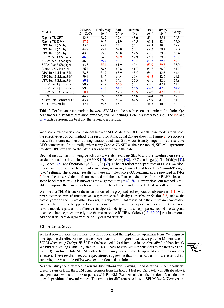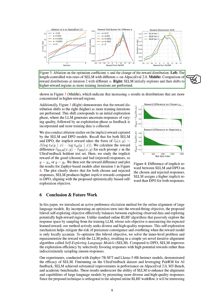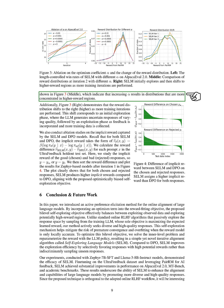We conducted ablation studies to gain a better understanding of the explorative optimism term. We examined how the optimism coefficient alpha affects the performance of SELM using the Zephyr 7B SFT model on the ALPACA EVAL 2.0 benchmark. When alpha is set to a small value like 0.0001, SELM behaves similarly to the baseline iterative DPO (alpha = 0). On the other hand, a large alpha can make SELM overly optimistic, leading to reduced effectiveness. These findings highlight the importance of choosing suitable alpha values to balance exploration and exploitation effectively.